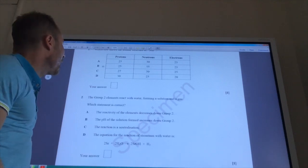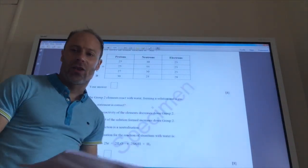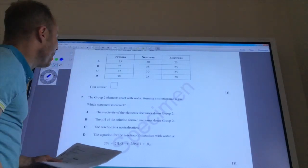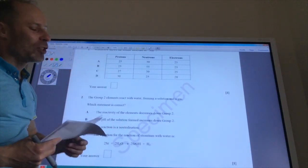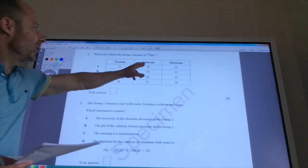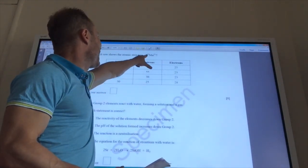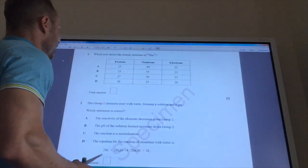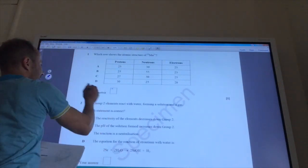The first one is which row shows the atomic structure of 55Mn2+. If you look up on the periodic table, manganese has got 25 protons so it's one of these. As it's 2+, it must have lost two electrons. So it's either of these two, 23 electrons. These two numbers have to add up to 55. And if you look, protons plus neutrons, 25 plus 30 is 55. So the answer to this one is of course A.